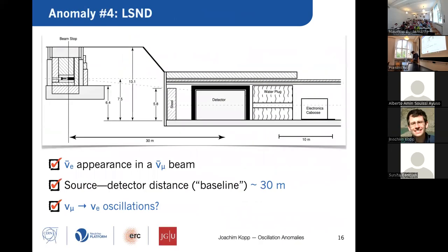Why wasn't the resolution of the reactor anomaly bigger news? Maybe not too many people cared about it anymore. The reactor anomaly was always floating around the three-sigma level, and already in the past few years people had cast doubt on it from different directions. A large fraction of the community always had the impression since about a few years ago that there was probably something wrong with that calculation.